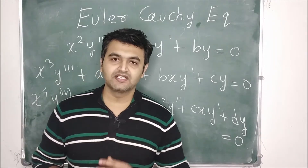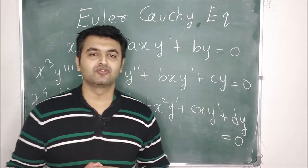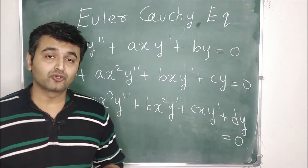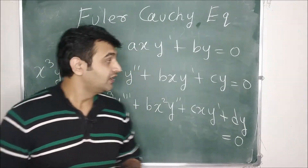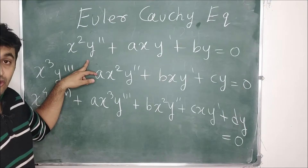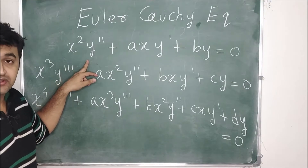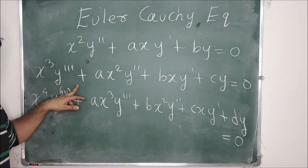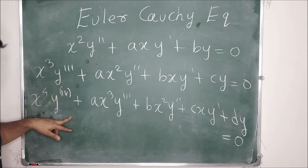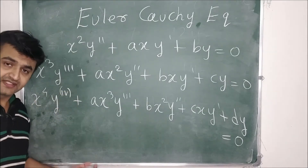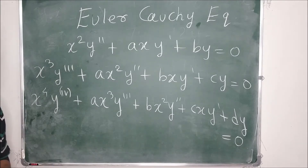Welcome to the 14th lecture on the course Ordinary Differential Equations. Today we are going to talk about Euler-Cauchy equations. The first one is called an Euler-Cauchy equation of order 2, the second is order 3, the third is order 4, and you keep going — order 5, order 6, and so on till nth order.